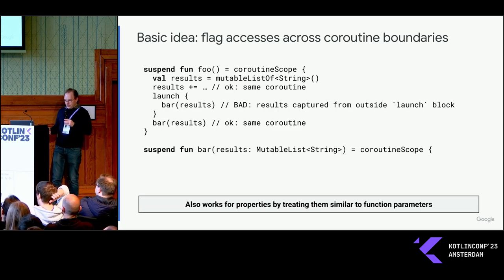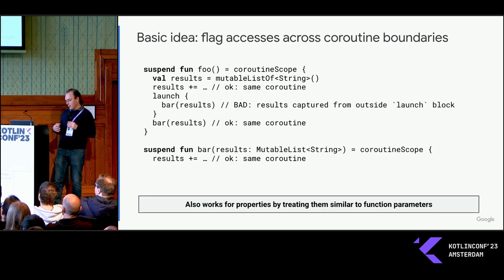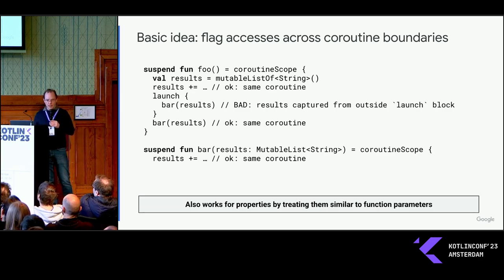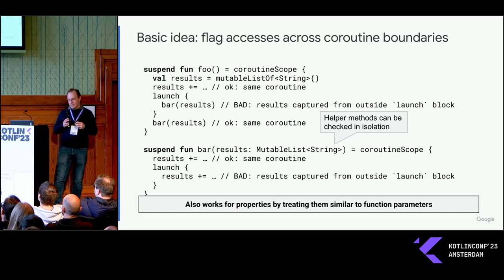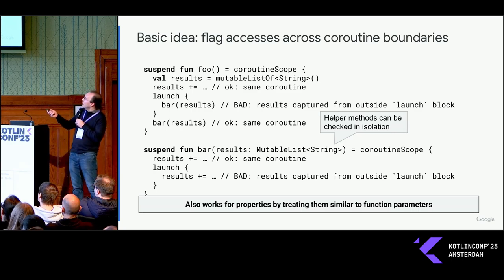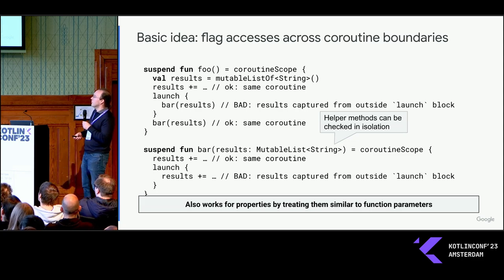Here's our bar function. The bar function takes our mutable list and does basically the same thing. That's fine — whatever coroutine we're called in, we're modifying it, that's OK. But if we open a child coroutine inside bar, same thing — we don't like it. What's nice about this approach is that we can look at each method separately. Because the call site to bar, we already checked up there and determined that it's bad. So what's happening in bar itself, we can look at that separately and just worry about child coroutines within it.